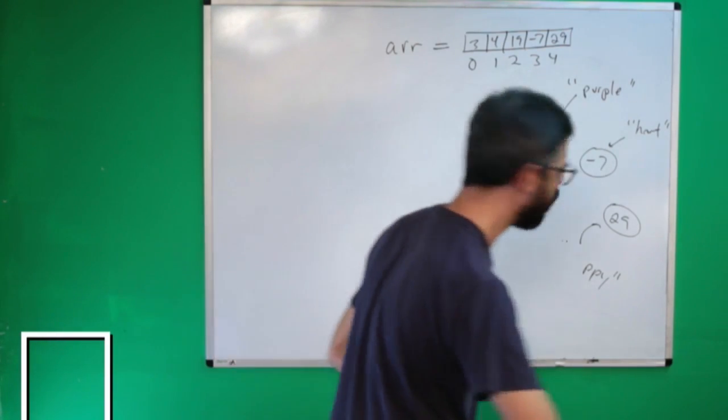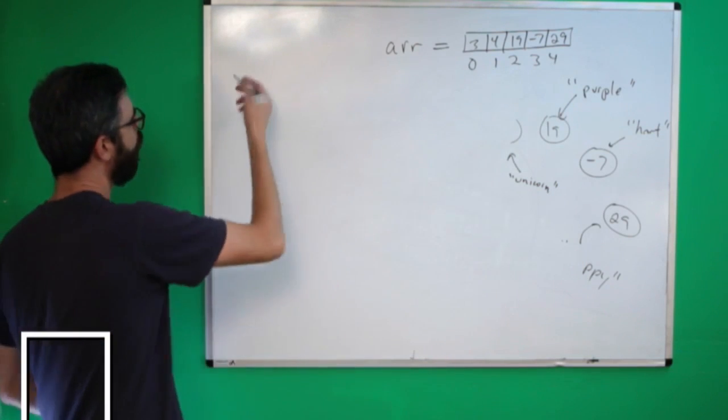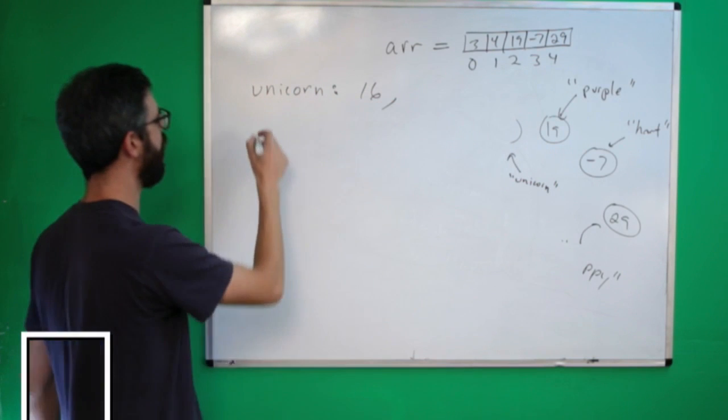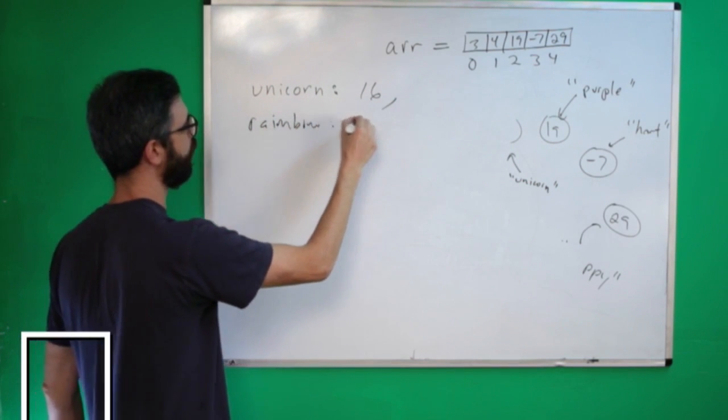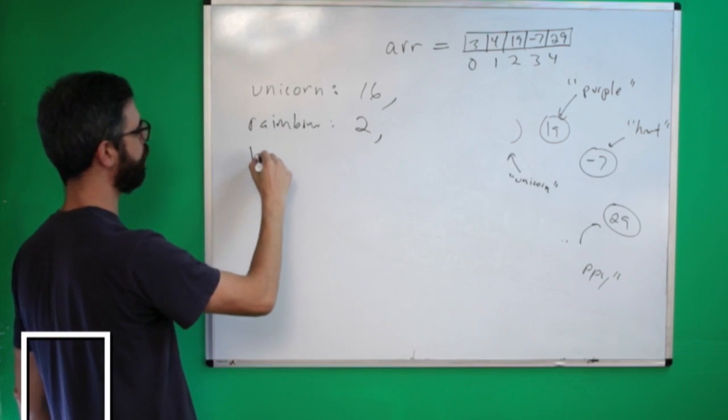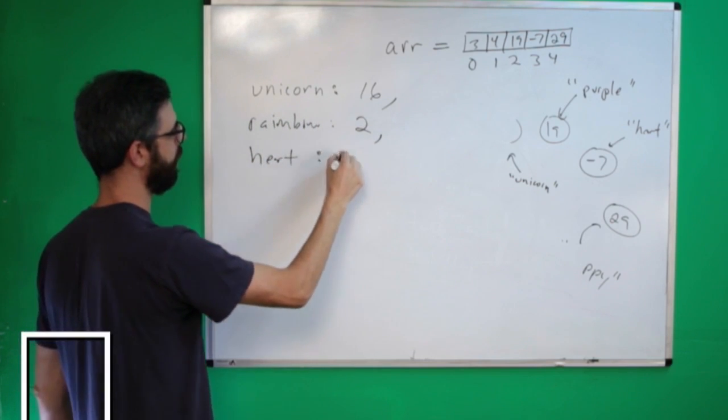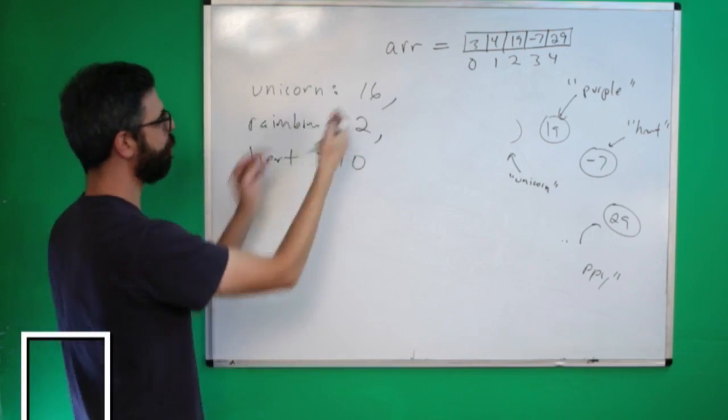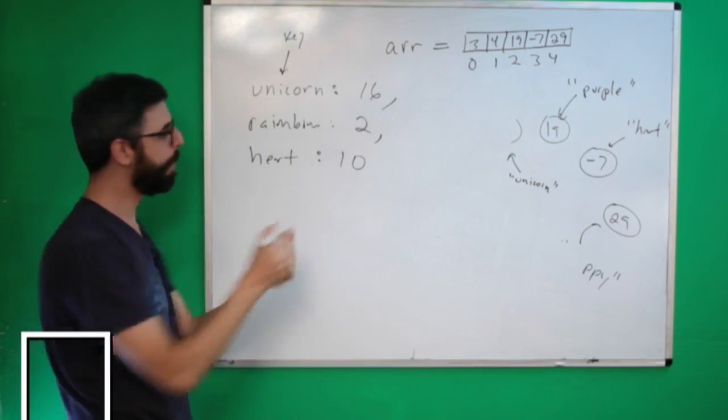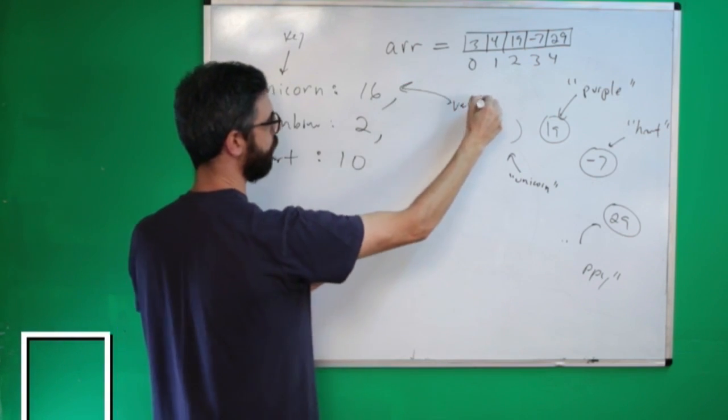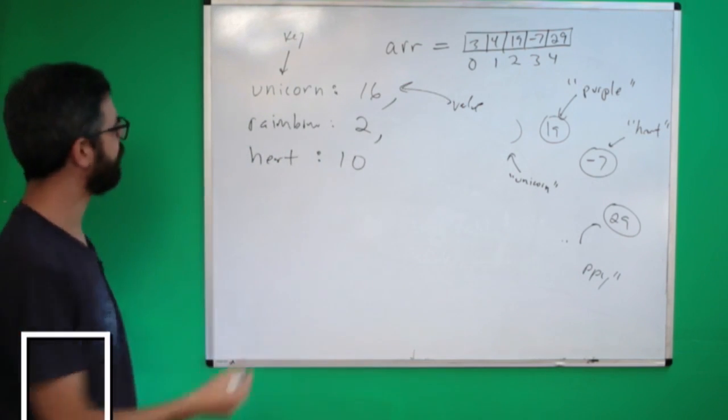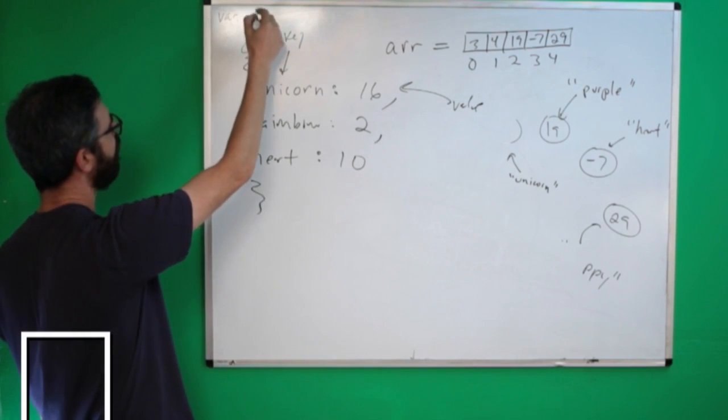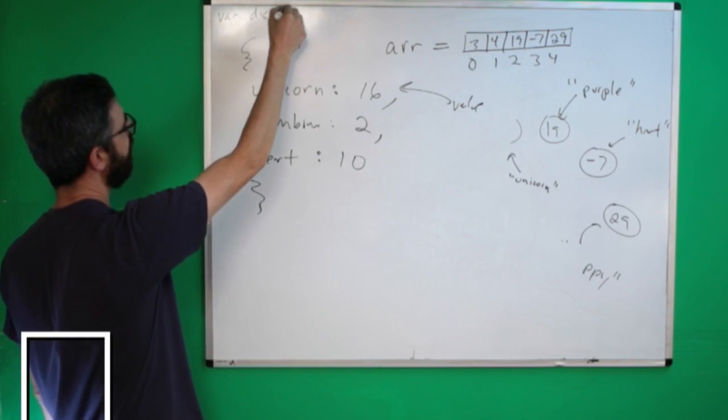Let's just say what I wanted to do was pair words with numbers. I could say something like unicorn colon 16 comma rainbow colon 2 comma heart colon 10. So, you could see how this is like a nice list of key value pairs. This being the key to look up a particular value, 16. Let's put some more syntax on this. Like, oh, I'll just put a curly bracket here, and I'll put a curly bracket here, and I'll say var dictionary equals this.